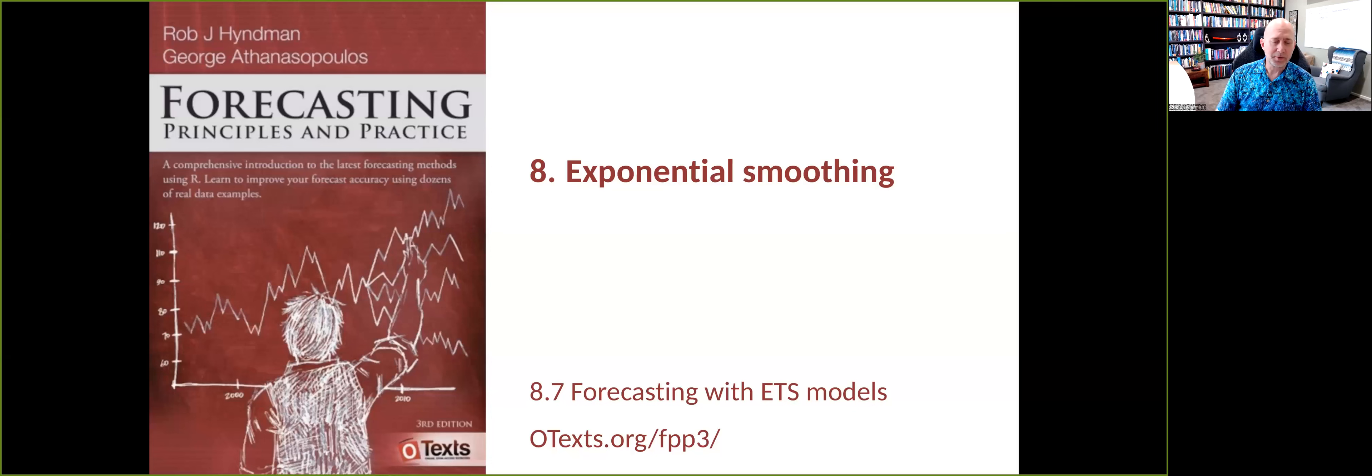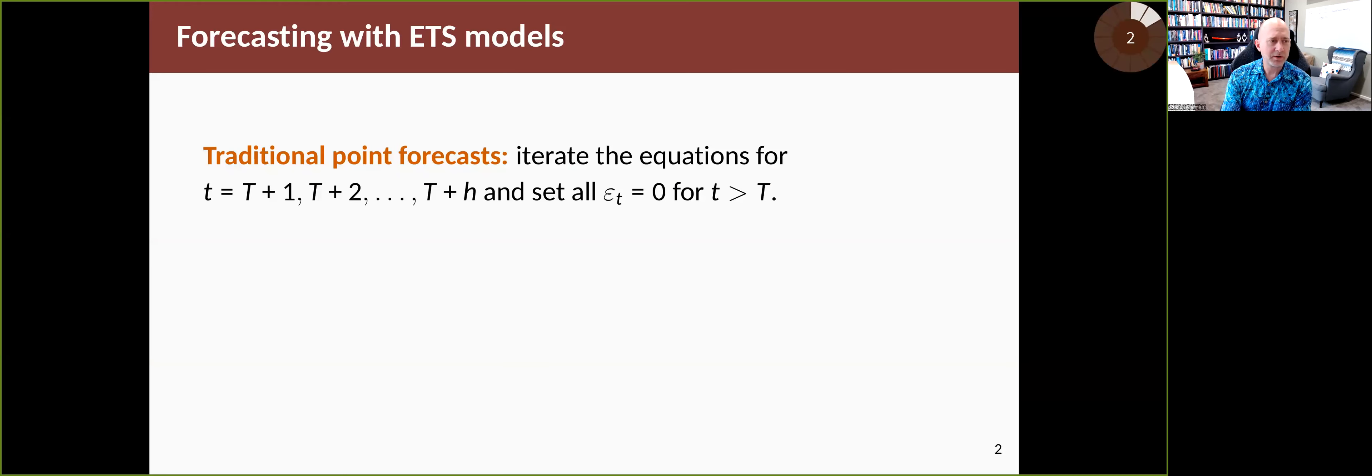Now we come to forecasting with ETS models, which is usually the point of using an exponential smoothing model. Traditionally, point forecasts have been obtained by iterating the equations of the model for future time horizons, setting all of the future stochastic error terms to zero.